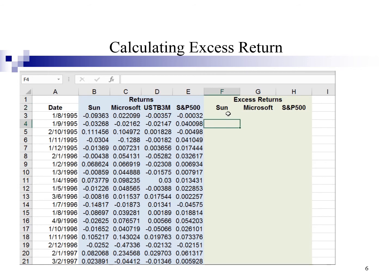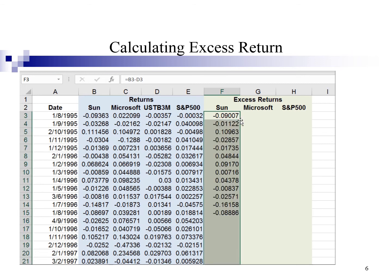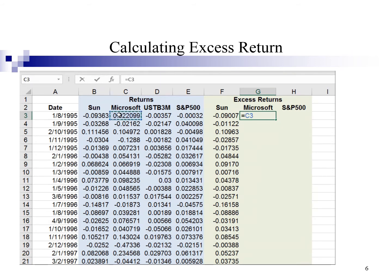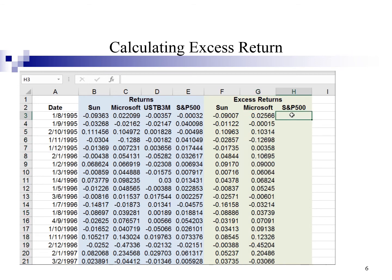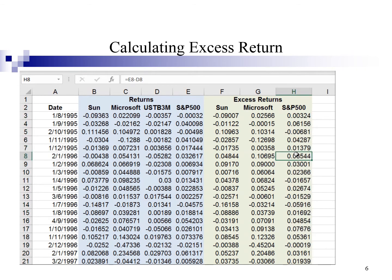I'm going to calculate excess return for the Sun. I shall type equal Sun returns minus US Treasury bill rate. Enter. I'm going to double click to obtain the rest of the answer. Microsoft excess return will be equal Microsoft return minus U.S. Treasury bill rate. Enter. Double click and here is the answer. For S&P 500 excess return, it will be equal S&P 500 return minus risk-free rate. Enter. Then I put my cursor here and double click. So, we have obtained the excess return for the stocks as well as the market.